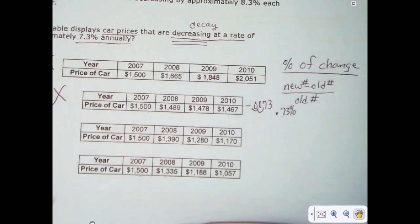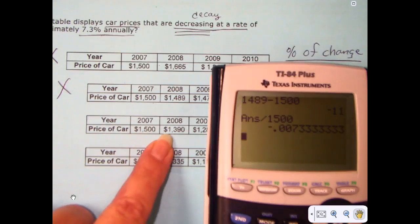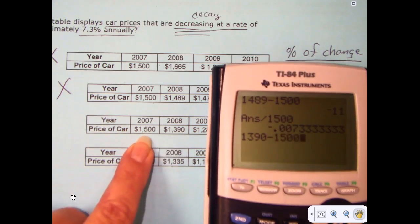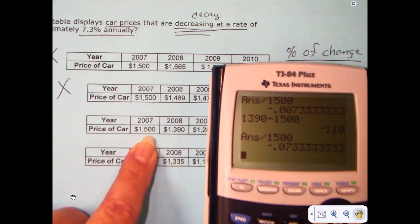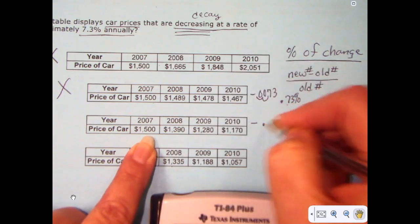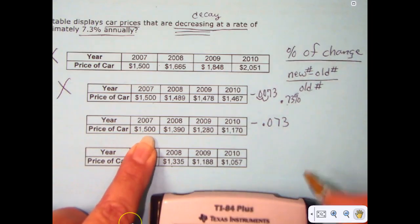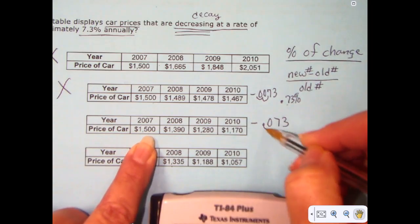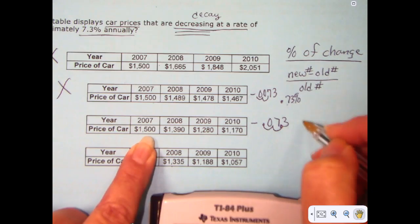Go ahead and pause the video and check C, see if you get the right answer, and if it's not C, check D. To check C, I take my new amount of $1,390, and I subtract the original amount of $1,500, and this price has gone down $110. I divide that by the original price of $1,500, and I get .073. Negative .073.